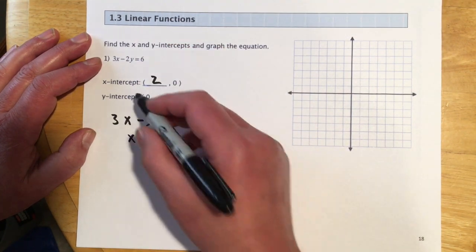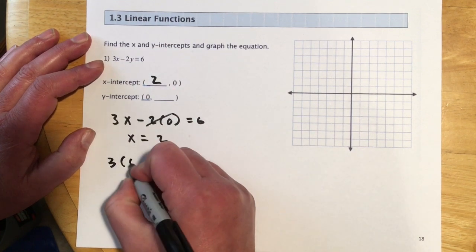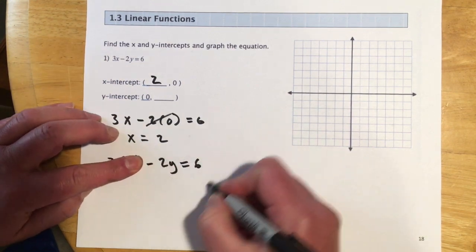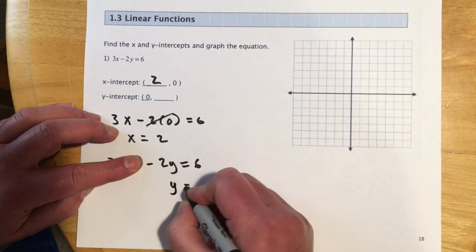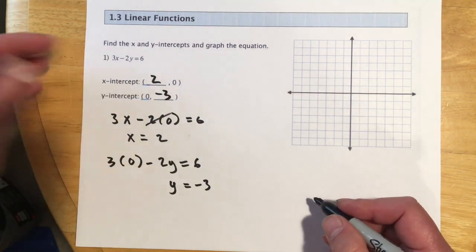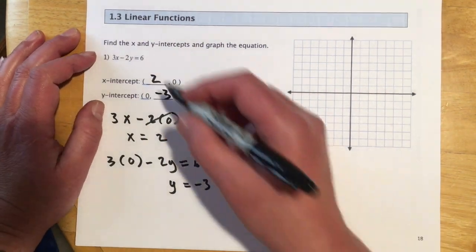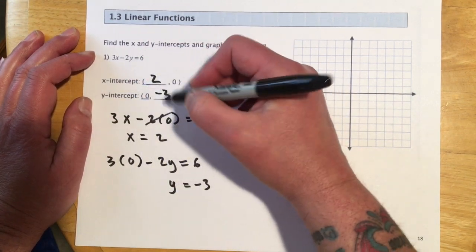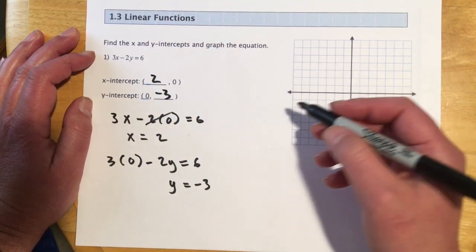And then for the y-intercept, we let x equal 0. So 3 times 0 minus 2y equals 6. So then that drops out. Divide over the negative 2 and get y is negative 3. And then once we have two points, we can use that to graph the line. So often when we're in standard form, x's and y's are on the same side, the intercepts are actually going to be a fairly easy way to get it graphed.